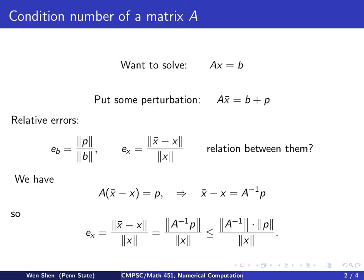So we can rewrite the error EX in the following way. It's the distance between X bar and X over X norm, and then we use this relation for the numerator. We get A inverse P norm over X norm. And then we use the basic property of the norm, that is a matrix times a vector in vector norm is bounded by the matrix norm times the vector norm. So we get this relation.